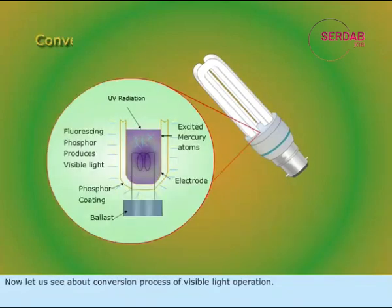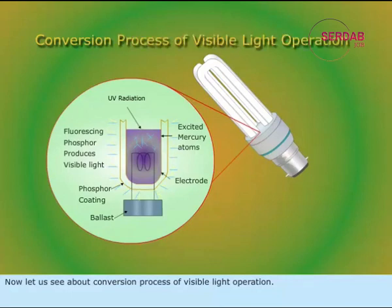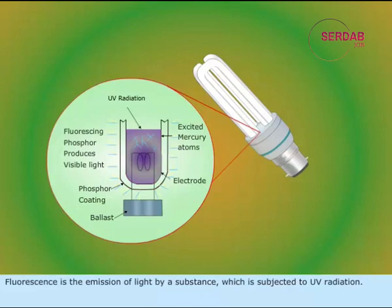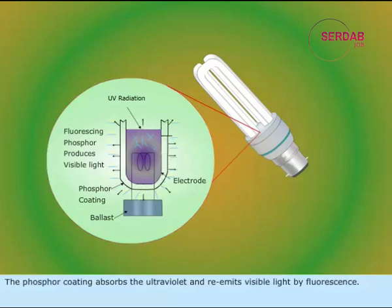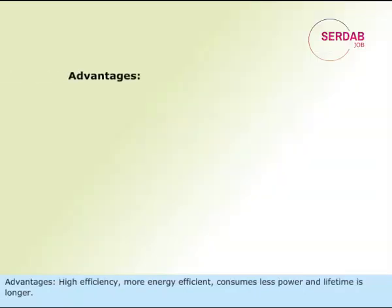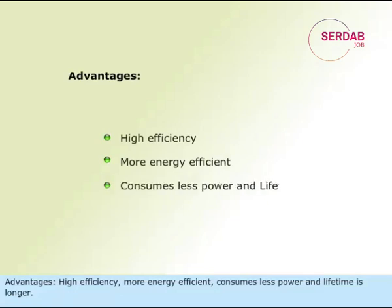Now let us see about the conversion process of visible light operation. The glass tube is lined with a coating of a fluorescent material called phosphor. Fluorescence is the emission of light by a substance which is subjected to UV radiation. The phosphor coating absorbs the ultraviolet and re-emits visible light by fluorescence. Advantages include high efficiency, more energy efficiency, consumes less power, and a longer lifetime.